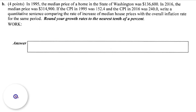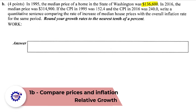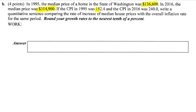Let's do the second part. In 1995, the median house price was one amount; in 2016, the median price was another. The CPI in 1995 matches the first, and the CPI in 2016 matches the second. We want a quantitative sentence comparing the rate of increase in house prices with the overall inflation rate. So I'm actually going to do two calculations here: one for prices and one for inflation.